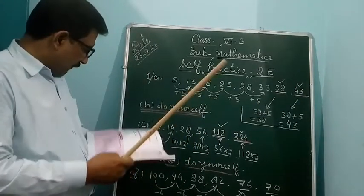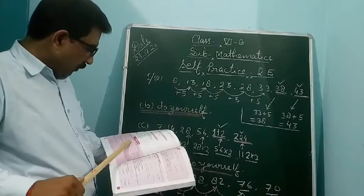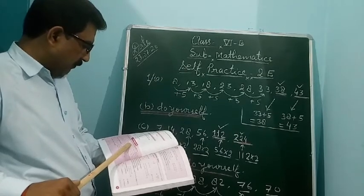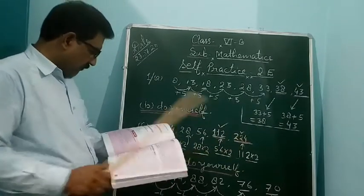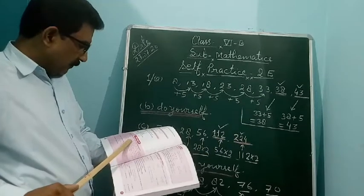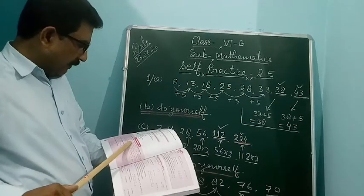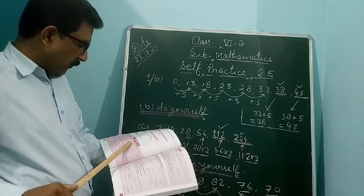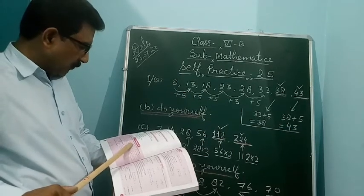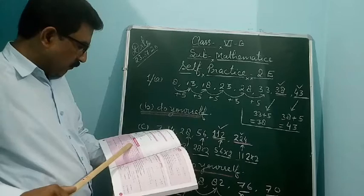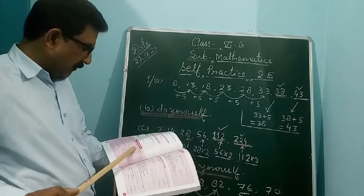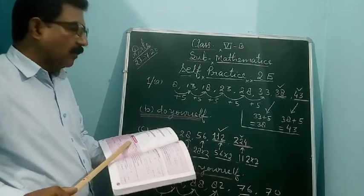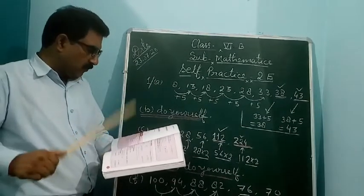Question B: It is given 56, 54, 52, and 50. It is very easy — you can do it yourself because it is decreasing by 2. So: 56 minus 2 is 54, 54 minus 2 is 52, 52 minus 2 is 50, 50 minus 2 is 48, and 48 minus 2 is 46. So in the series, it will come 48 and 46.